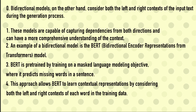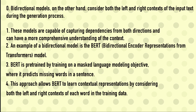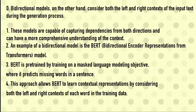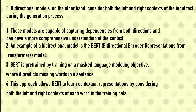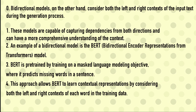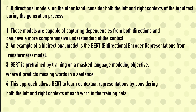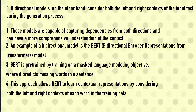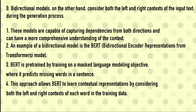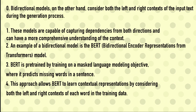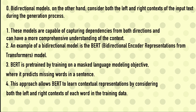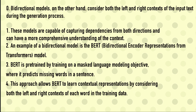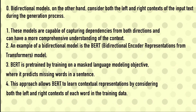BERT is pre-trained using a masked language model objective, where it predicts missing words in a sentence. Imagine a sentence like: 'I went to ___ and my car was missing.' The model has to fill in the blank — what is the word in the middle? That's why it is capable of understanding both sides. This approach allows BERT to learn contextual representations by considering both the left and right context of each word.